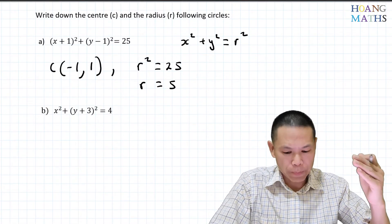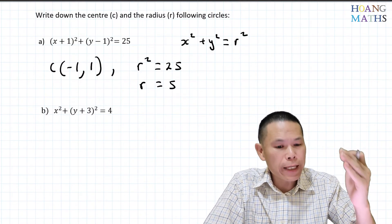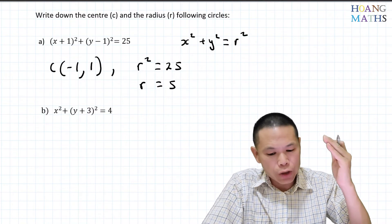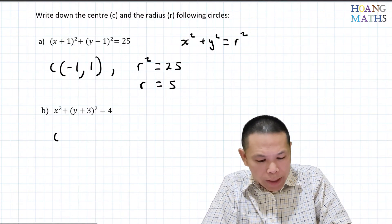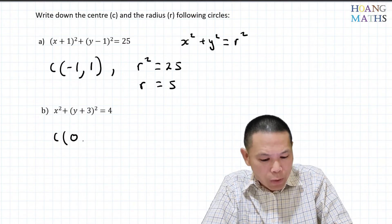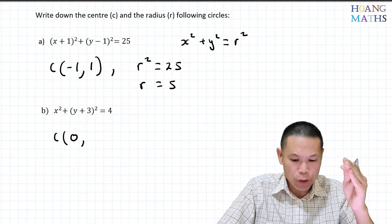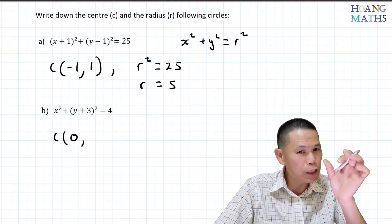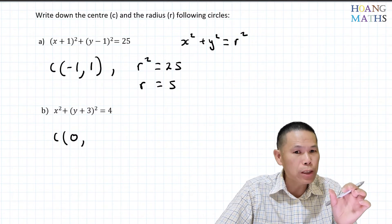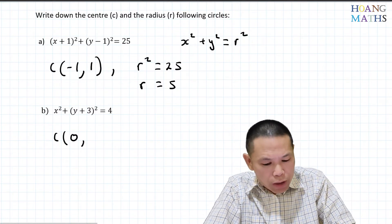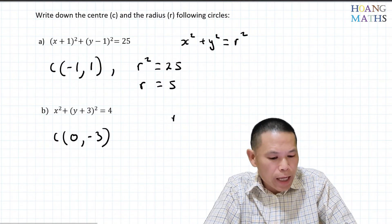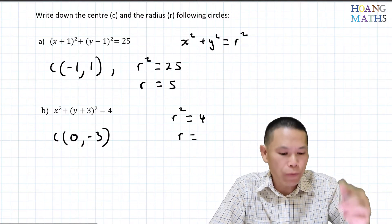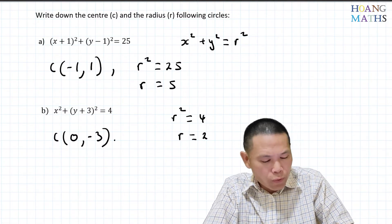For the next one, remember x squared plus y squared equals r squared. For x, since it's just x squared, the x-coordinate of the center is still zero. For y, because it's (y plus 3) squared — plus 3 inside — that means it moved down three units from the origin, so the y-coordinate is negative 3. The radius: r squared equals 4, so r equals root of 4 equals 2.